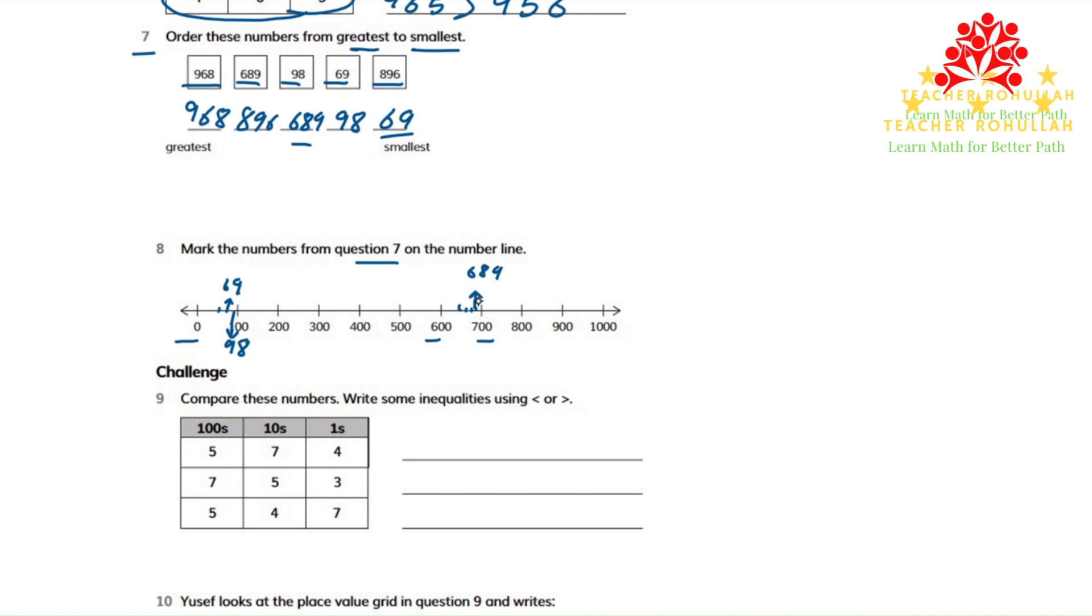The fourth one is 896 which is between 800 and 900. So 896 is almost close to 900.